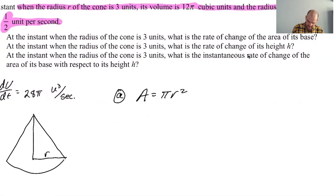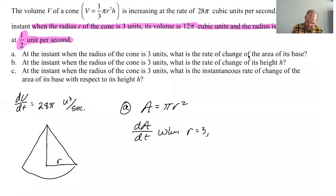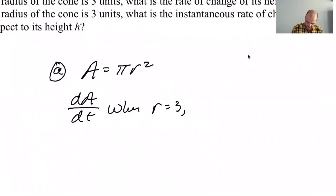So for part a, the area of the base is just pi r squared. And we're trying to find dA/dt when r equals three. And then dR/dt equals one half.